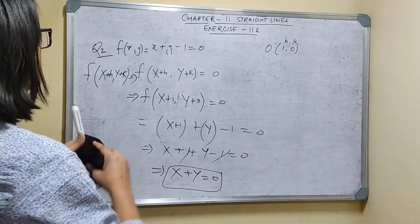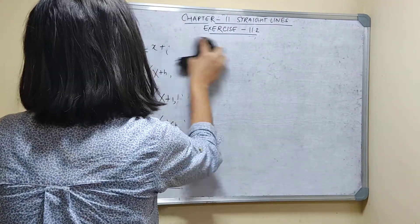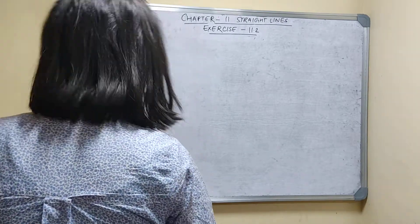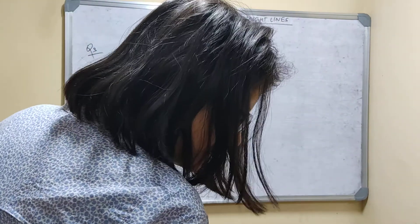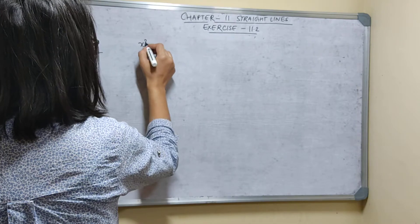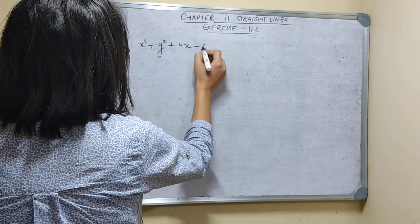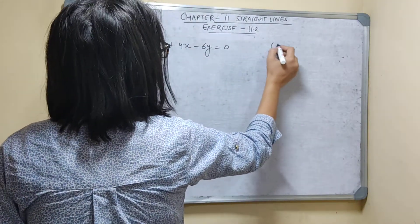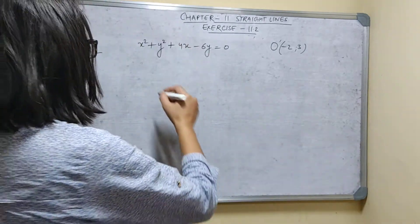Question 3: Find the transformed equation of the curve X² + Y² + 4X - 6Y = 0 when the origin is shifted to the point (-2, 3). So the new origin is (-2, 3). You know X = capital X + H and Y = capital Y + K.